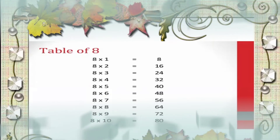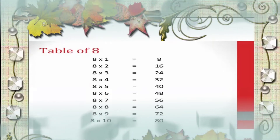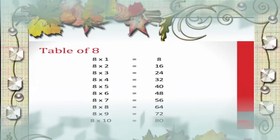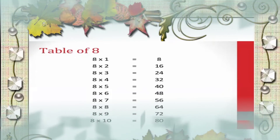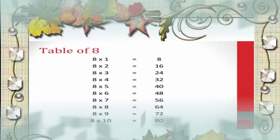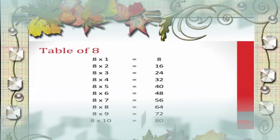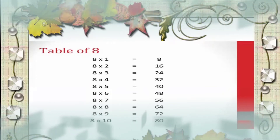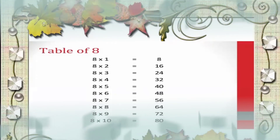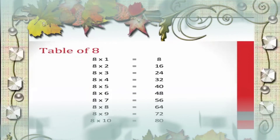Now the table of 8. 8 1's are 8, 8 2's are 16, 8 3's are 24, 8 4's are 32, 8 6's are 48, 8 7's are 56, 8 8's are 64, 8 9's are 72.